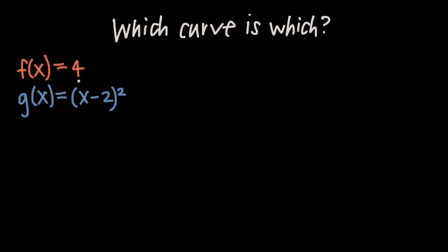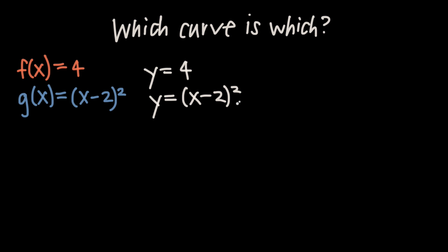The first thing we have to do is find the intersection points. We can't determine top and bottom without them because we need to know the interval of interest. We find intersection points by setting the curves equal to each other. Since f equals 4 means y equals 4 and g equals x minus 2 quantity squared means y equals x minus 2 quantity squared, we set the right-hand sides equal: x minus 2 quantity squared equals 4.